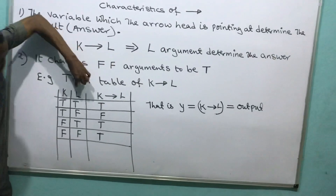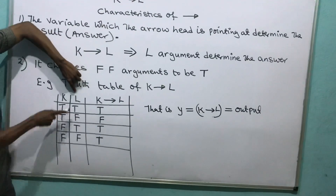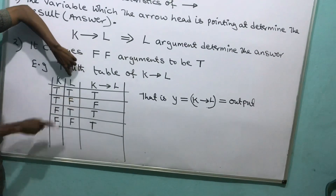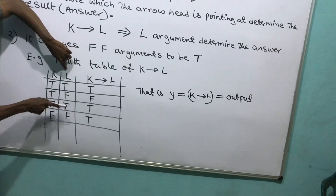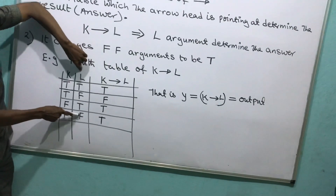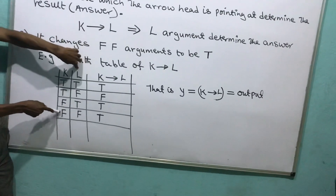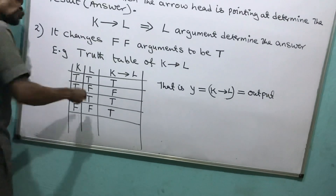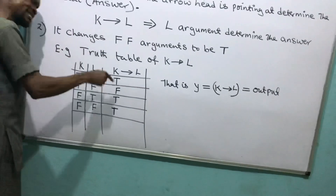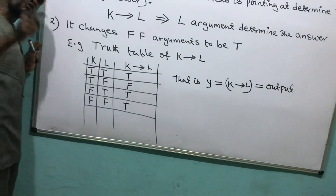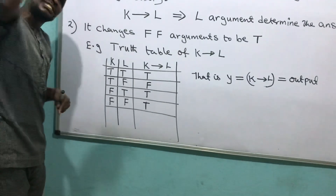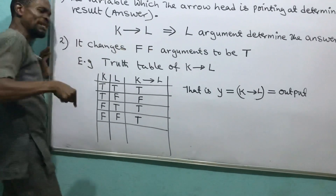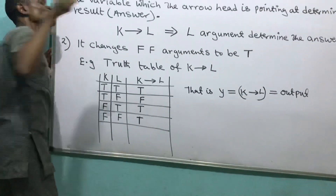The one arrow pointing at determines the result. I will hold my hand on the one arrow pointing at. What is the value of L here? True — the answer would be true. What is the value of L here? False — the answer would be false. What is the value of L here? True — the answer would be true. What is the argument of L here? It's false, and the argument of K is also false. Two of them is false-false — therefore it will say it is the word true. He changes false-false to the word true.